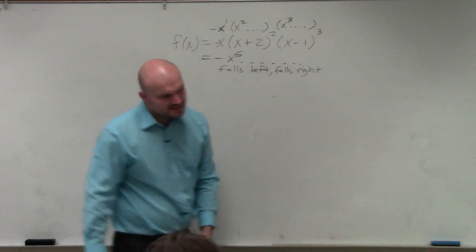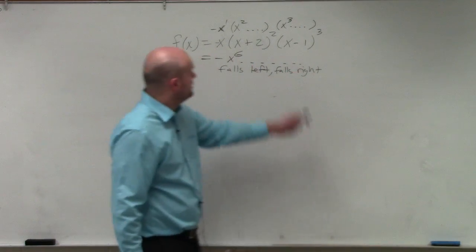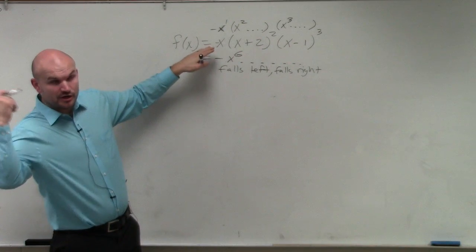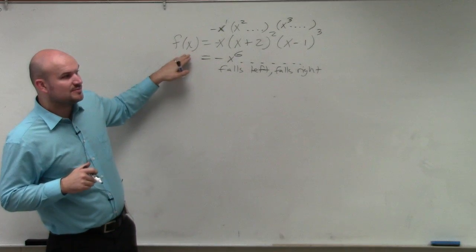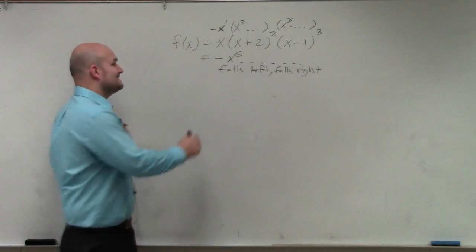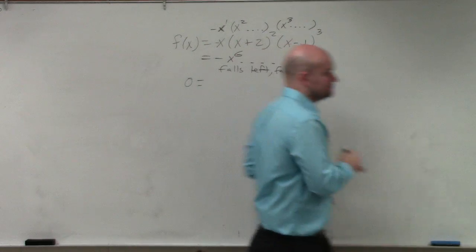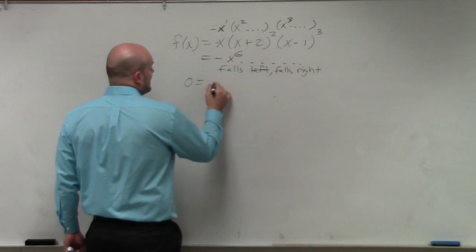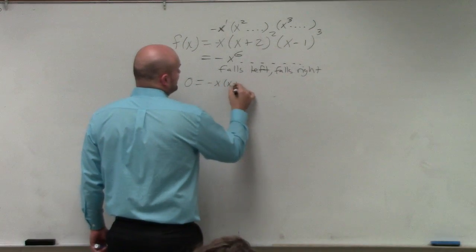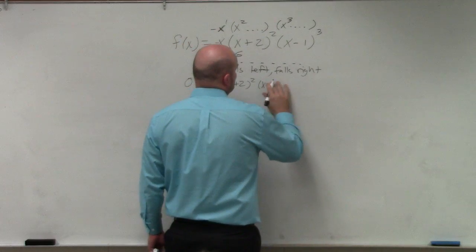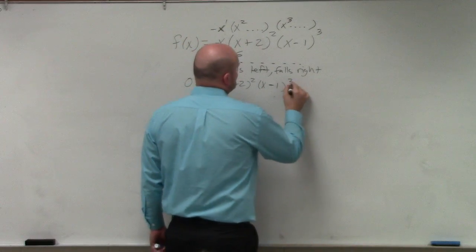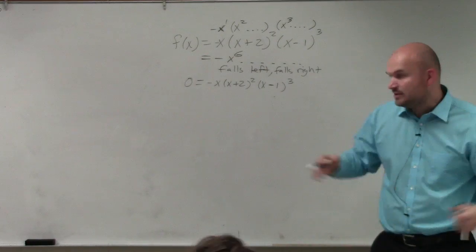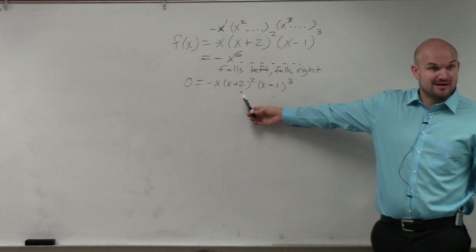The next thing it says is find the zeros. So here's our function. To find the zeros, basically what that means, if you remember in our notes, that means we need to replace f of x with 0. So we set that equal to 0. And we have negative x times x plus 2 squared times x minus 1 cubed. Now that we have a product of factors set equal to 0, we did this in your first set of focus lessons. We did problems like this.